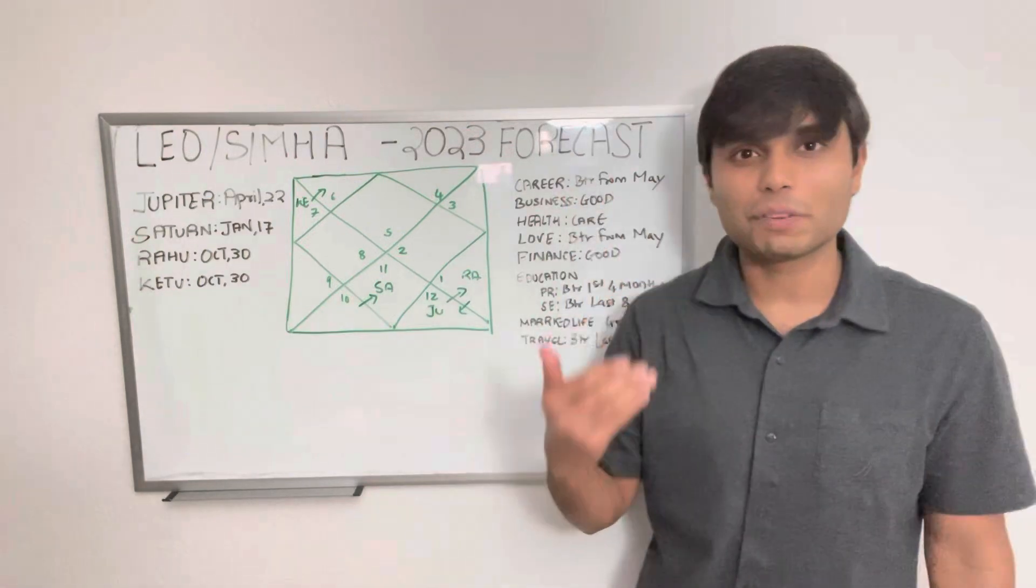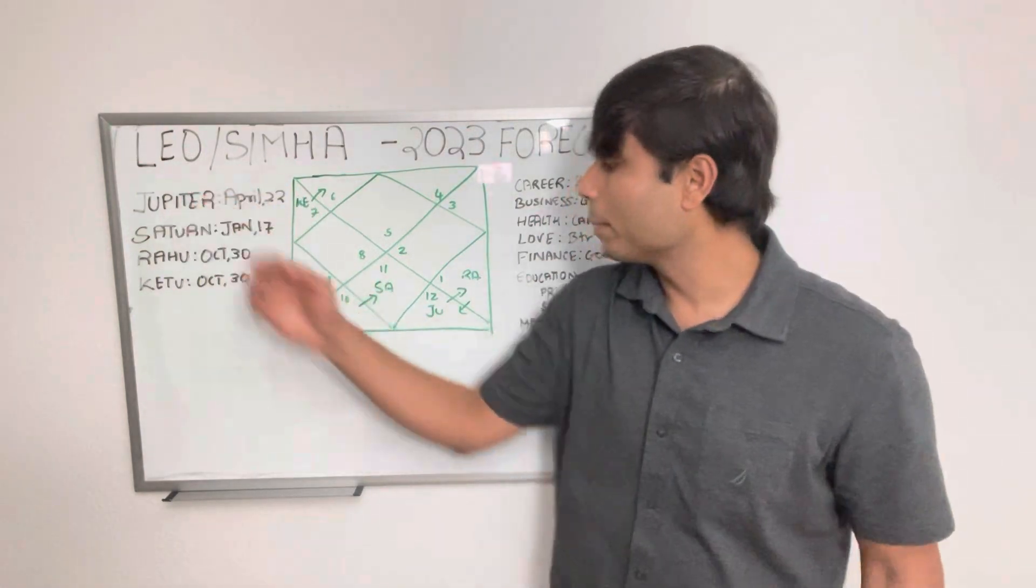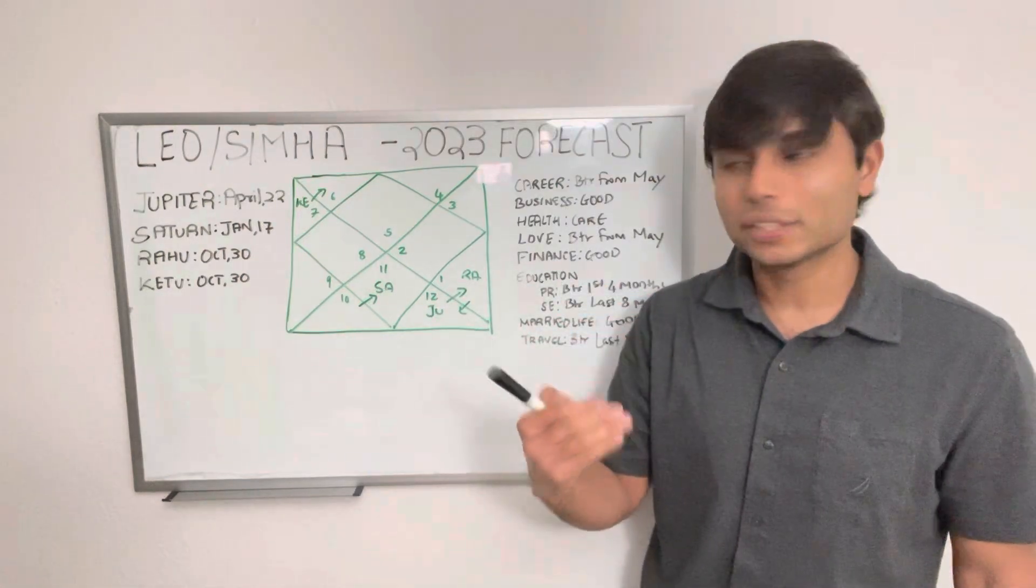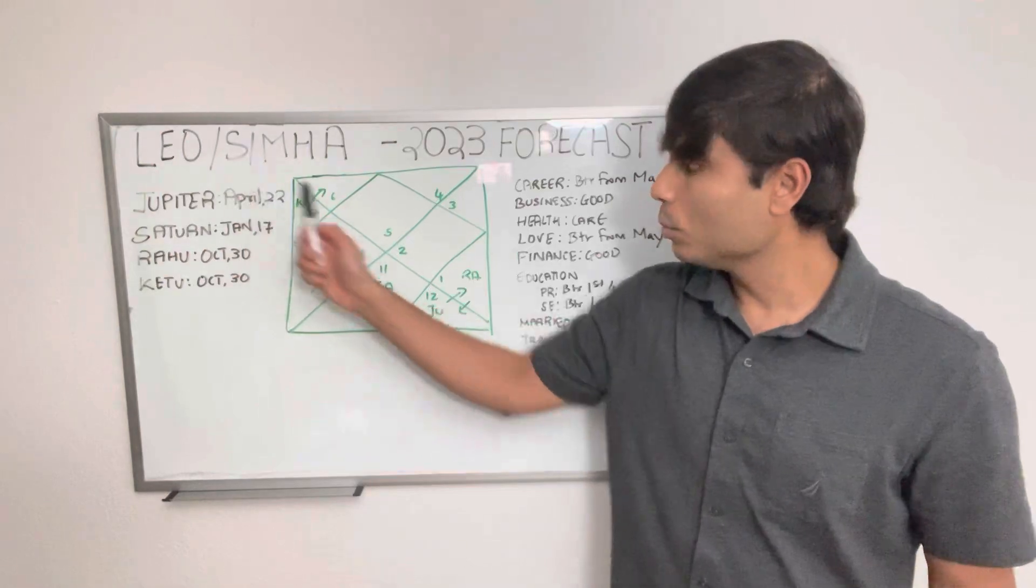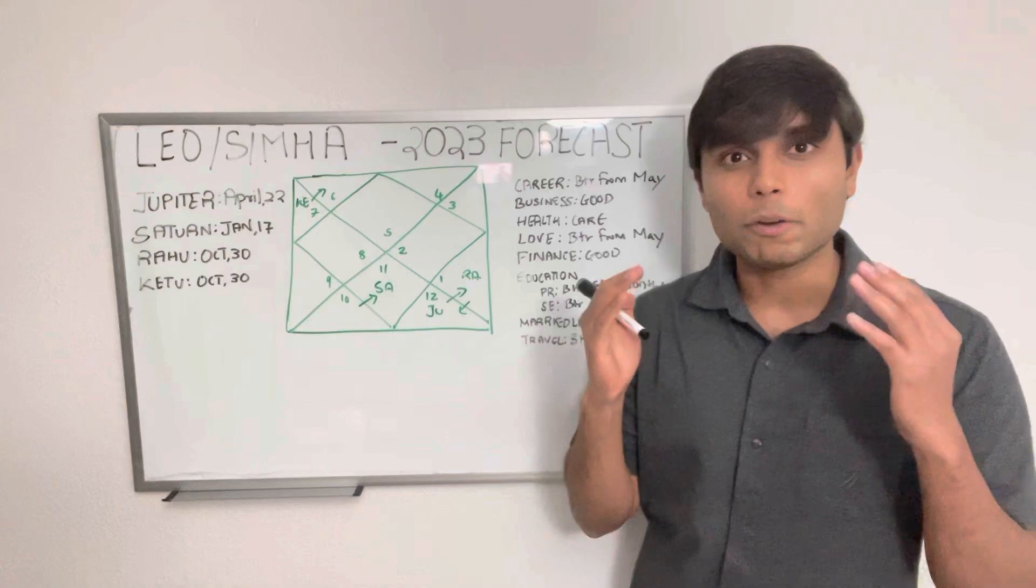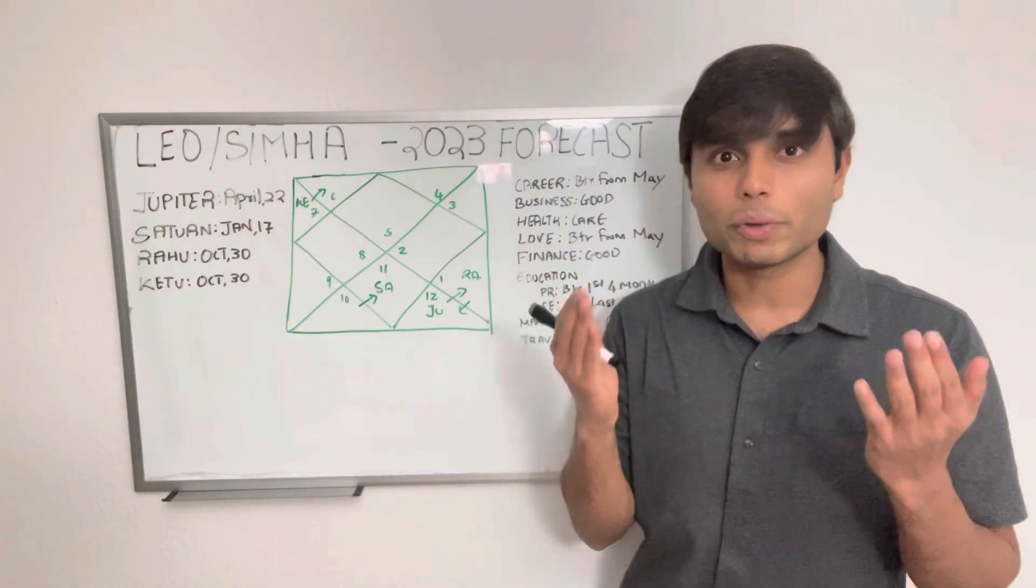Starting with Jupiter, it will be in your eighth house in its own sign Pisces, but on April 22nd it will finally transit to your ninth house in the sign of Aries and will be conjunct with Rahu.